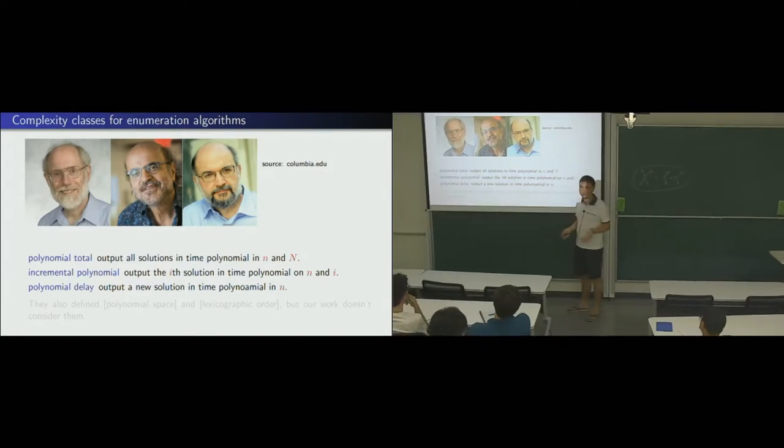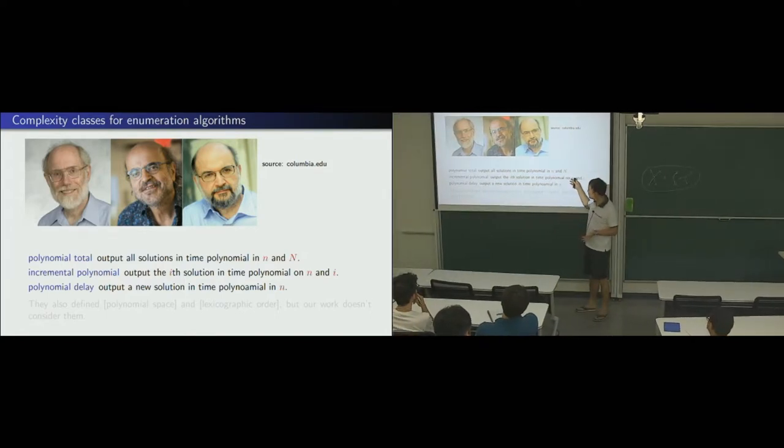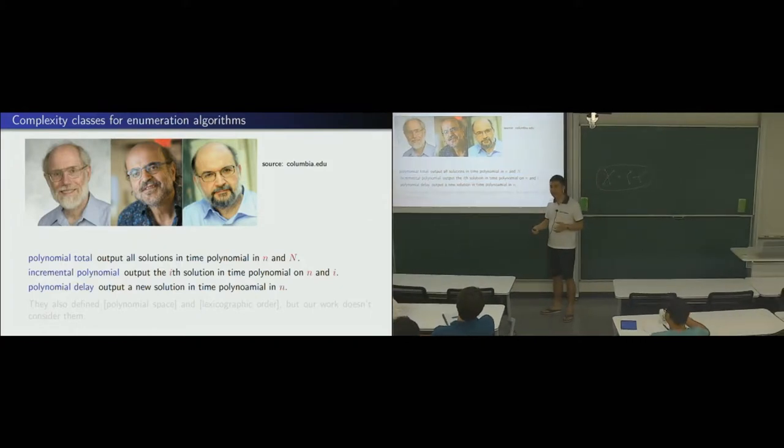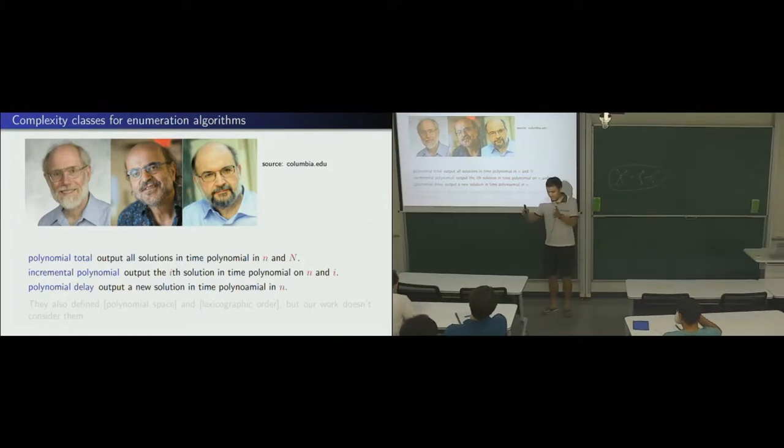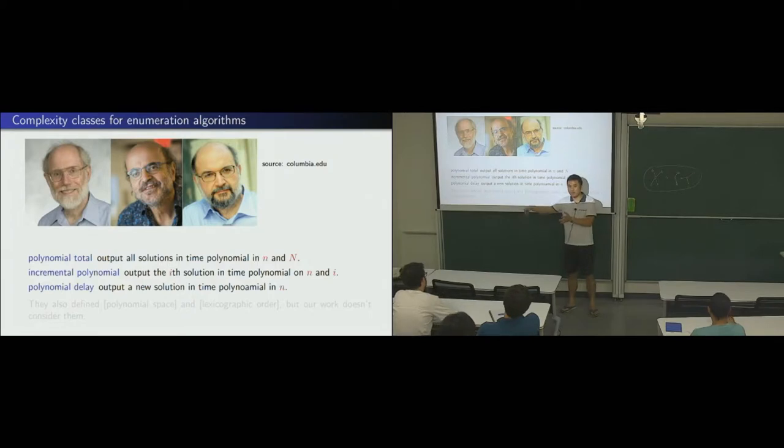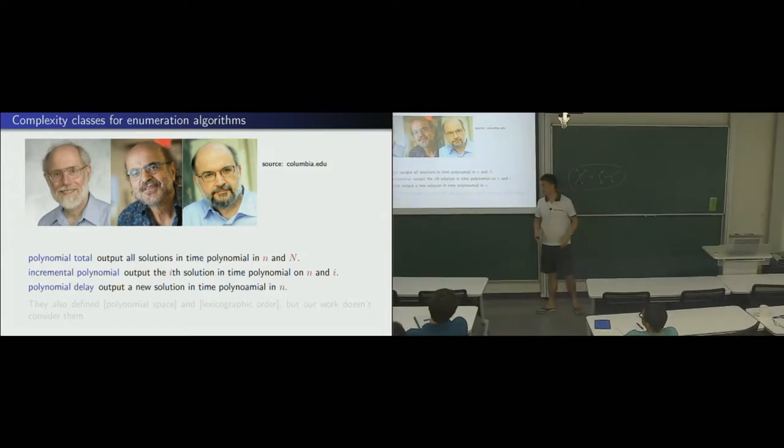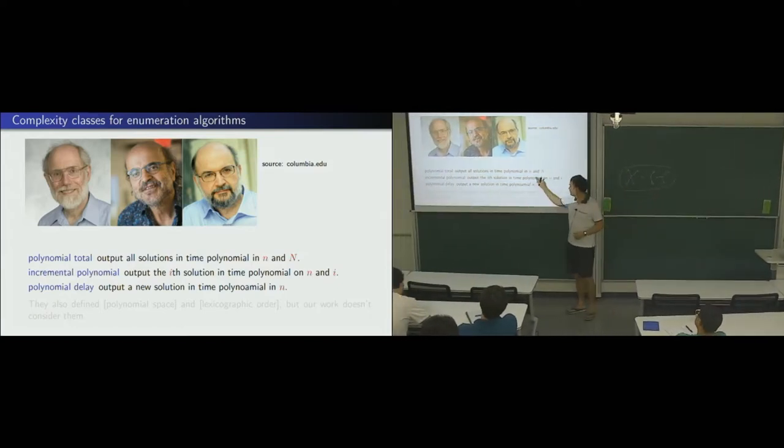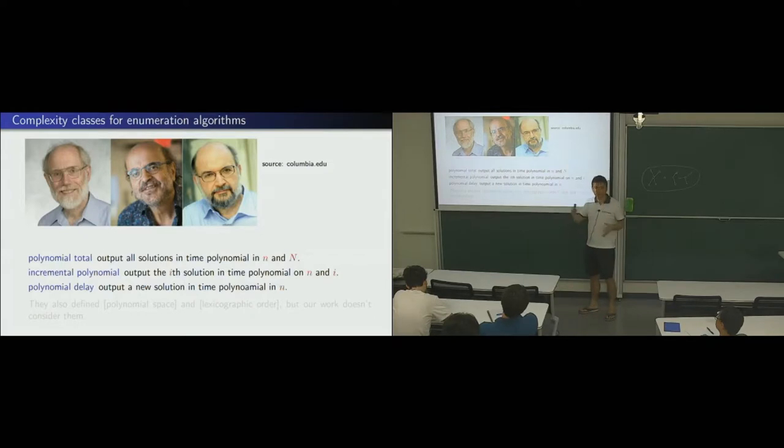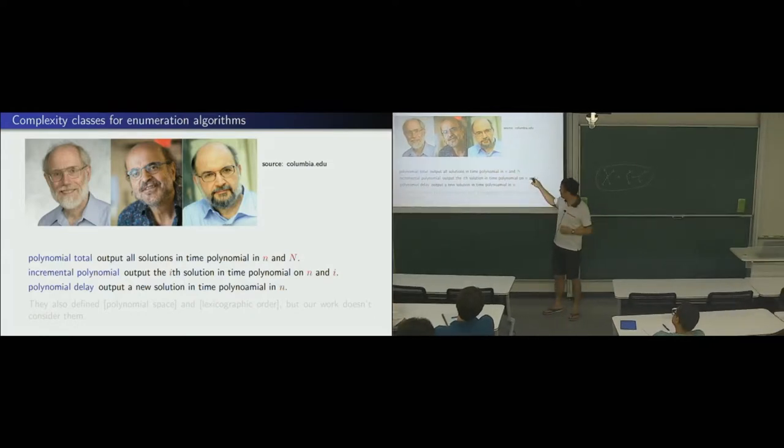But it can do a little bit better. Maybe. This one is incremental polynomial. That is, when you enumerate the number of solutions, the running time of the first solution needs to be polynomial on the input size. The second one is polynomial on the input size and one. So, it may be slower and slower. Okay? So, but for each new solution, the running time is n and i. Okay? So, this is a subset of polynomial total, right? For sure.